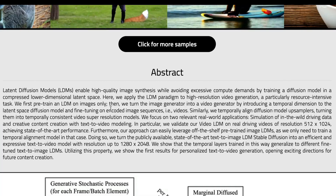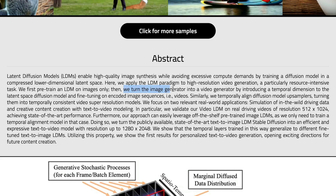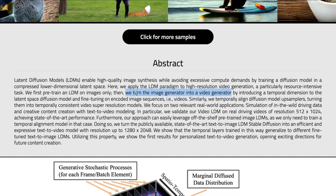What they're going to do is first pre-train an LDM on images only — it is not fine-tuned on videos. It is trained only on images, and then that image generator is converted into a video generator.